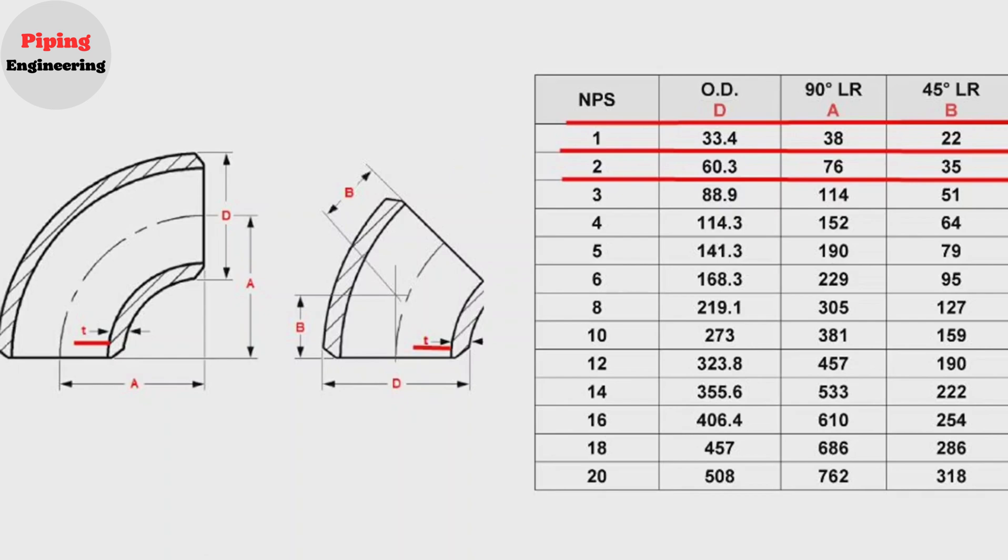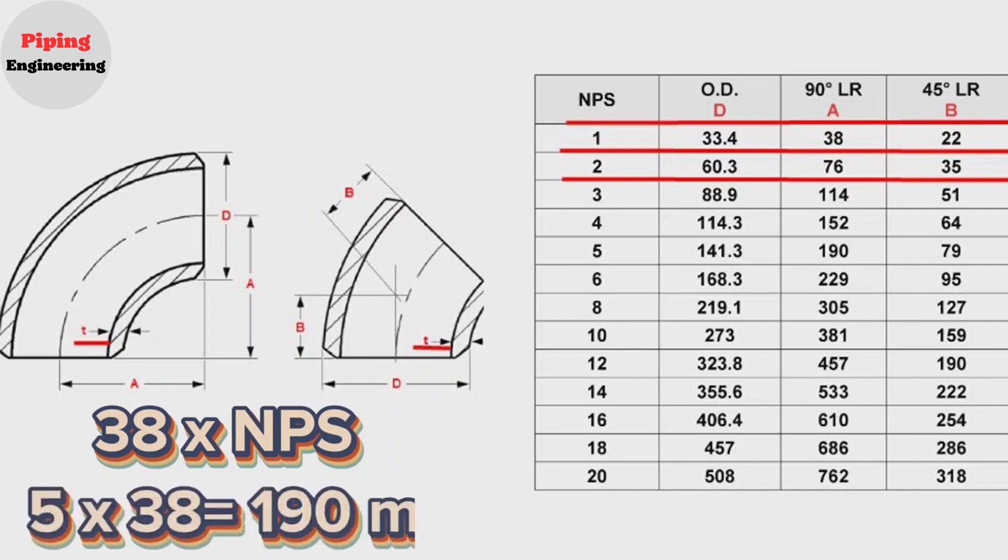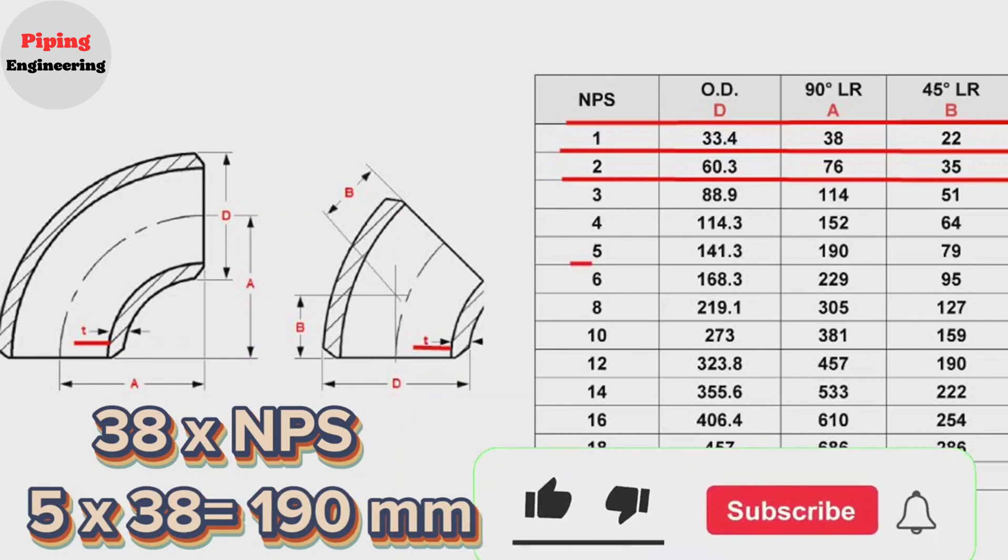We saw that in order to find the long radius 90 degree elbow size, have to multiply 38 to pipes NPS, nominal pipe size. For example, to find a 5 inch elbow size, we need to multiply 5 by 38. 5 times 38 is equal to 190 mm.